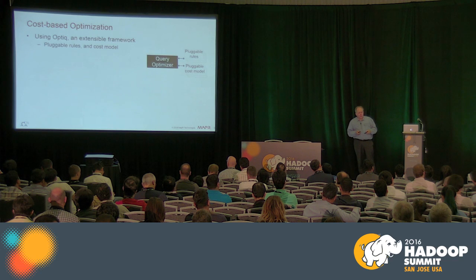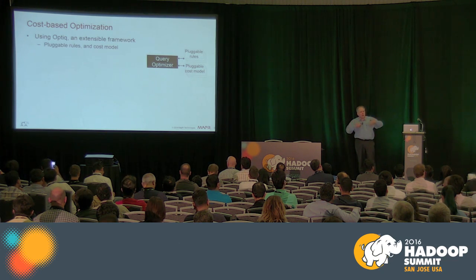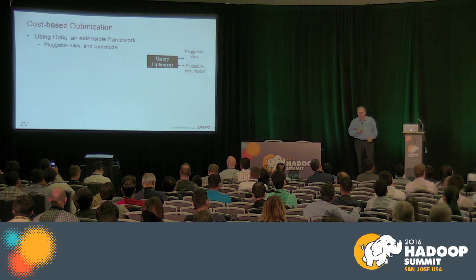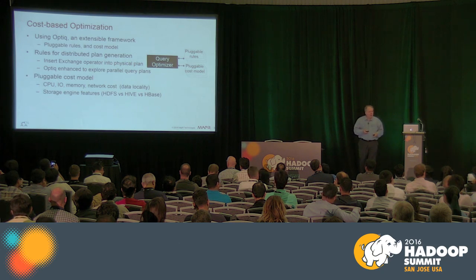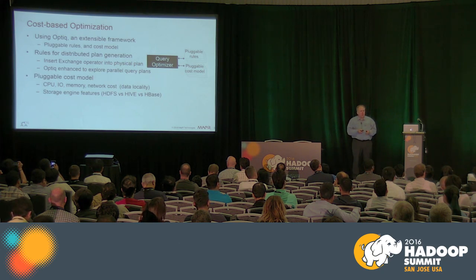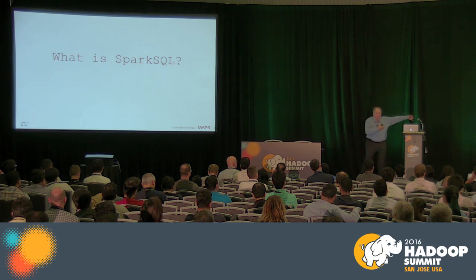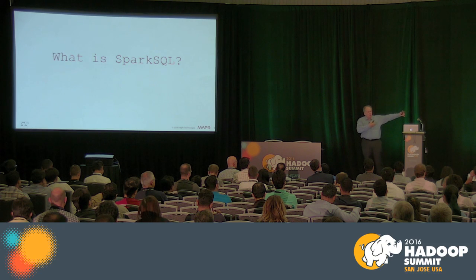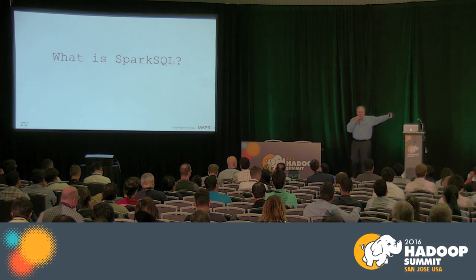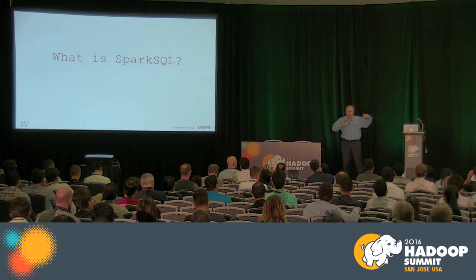The old name for the optimizer was Optiq. Drill brought that into Apache, which has since been spun out as a system called Calcite. It has a pluggable cost model and pluggable optimizations. That's a very quick introduction to Drill. I've left out a few things that are very different from Spark, but we'll get to those in a bit.